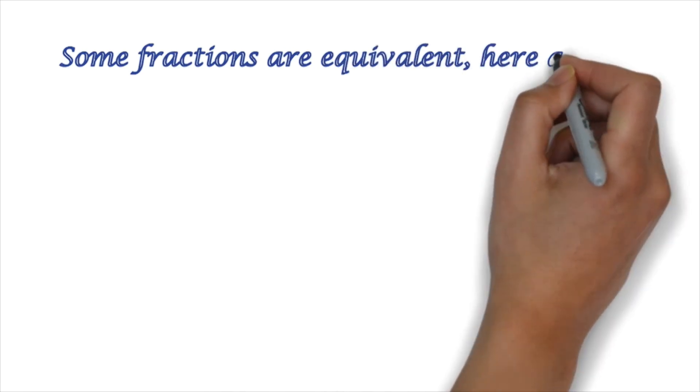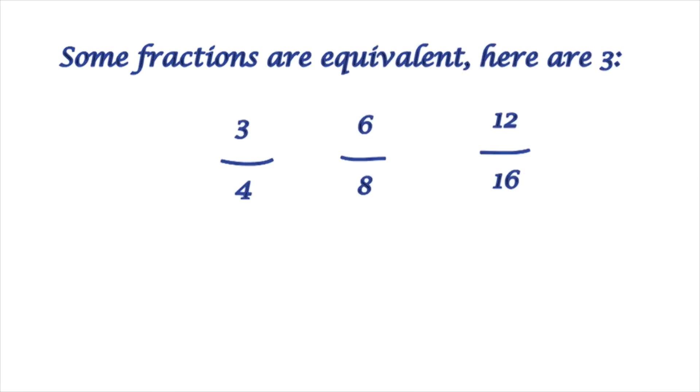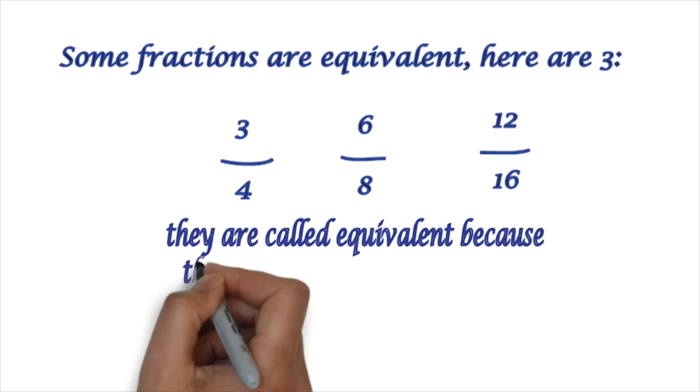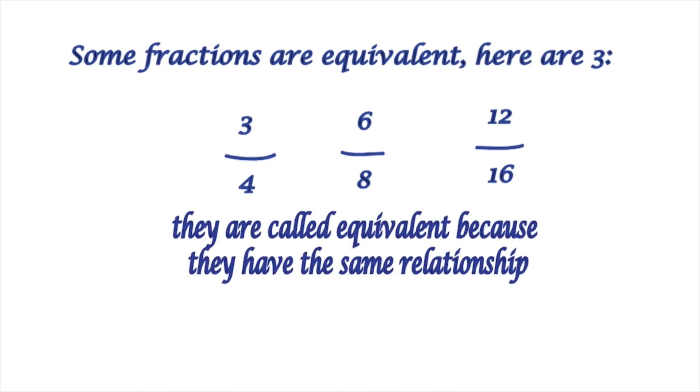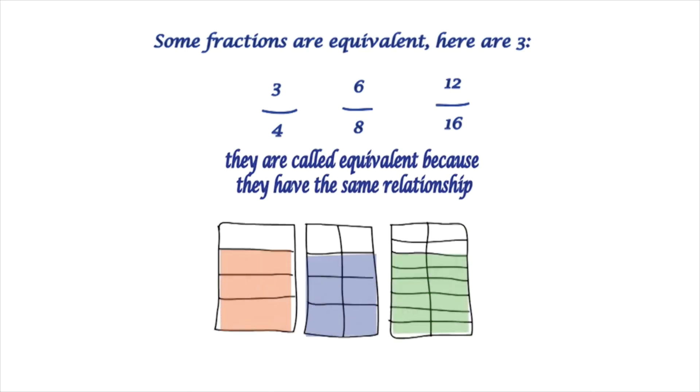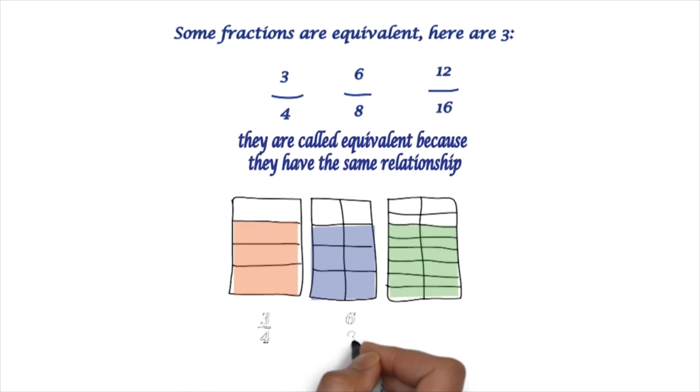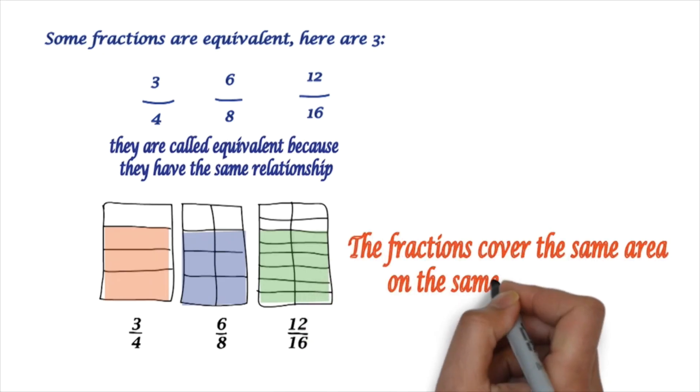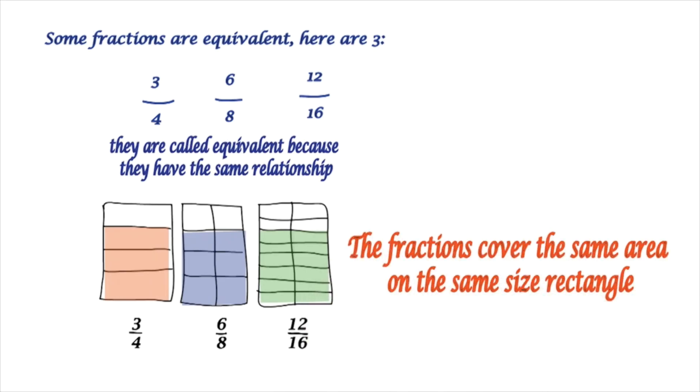So some fractions are equivalent. Here are three of them. They're called equivalent because they have the same relationship. As you can see, the fractions cover the same area on the same size rectangle.